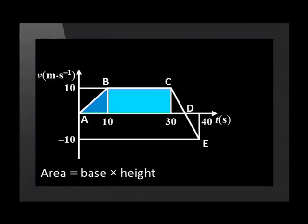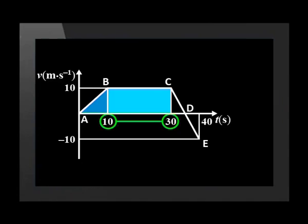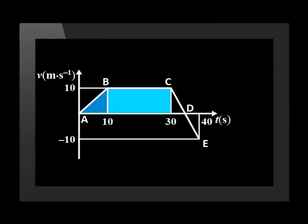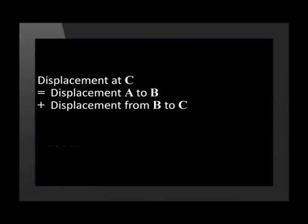Now let's find the displacement at point C. In this section, the area is a rectangle, so that area equals base times height. The base of this rectangle stretches from 10 seconds to 30 seconds, so in total it is 20 seconds. The area equals 20 times 10, which equals 200 meters. Therefore, the total displacement at C equals the area from A to B added to the area from B to C, giving us 50 meters plus 200 meters, which equals 250 meters.